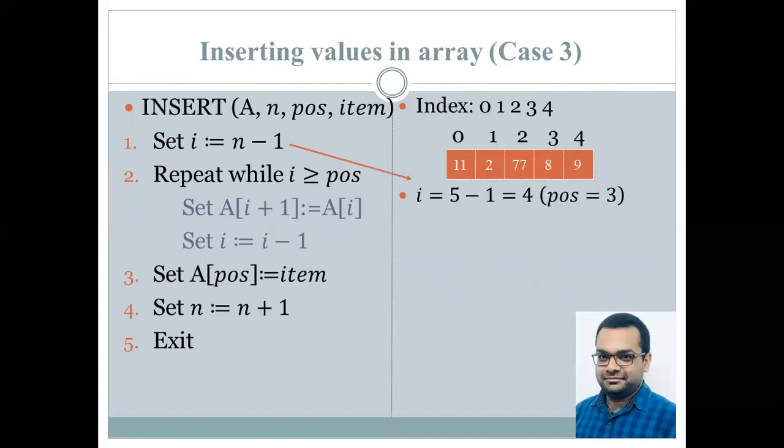So now you can see index goes from 0 to 4. Now, as soon as we enter the program, the first statement is executed. The value of i is made as n-1. That is 5-1, which equals to 4. Because it must point to the last index. And the value of pos is 3. That is the position at which element needs to be inserted. Which is the item in this case.